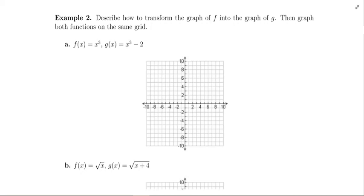In Example 2, there are three examples we are going to do. You are going to be given a basic function from Section 3.4, and we're going to plot that graph based on our knowledge from Section 3.4. Then you'll be given a second function that is a transformation of that original basic graph, and we'll apply the rules we just learned for vertical and horizontal shifts to graph the transformed function — none of this will involve making a table of values. So let's read the directions: describe how to transform the graph of F into the graph of G, then graph both functions on the same grid. Let's take a look at Part A.